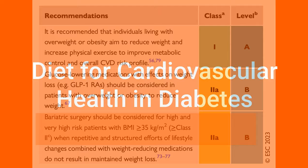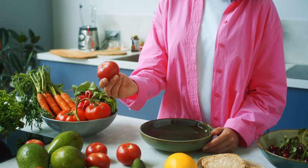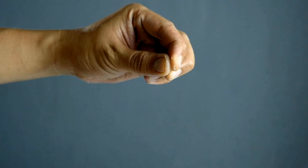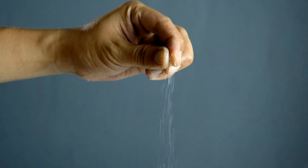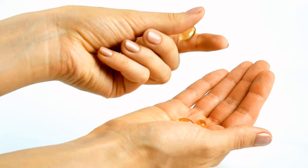The Mediterranean-style eating pattern improves glycemic control, lipids, and blood pressure — especially with olive oil or nuts — and can reduce cardiovascular events by one-third. Plant-based diets and high-protein diets also help with cardiovascular protection and weight loss. A reduction of salt intake can lower blood pressure in both hypertensives and normotensives, and can reduce cardiovascular events including mortality. Studies did not show cardiovascular protective effects with omega-3 fatty acid supplementations in patients with type 2 diabetes.